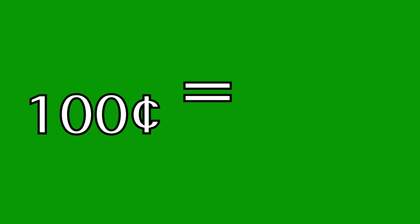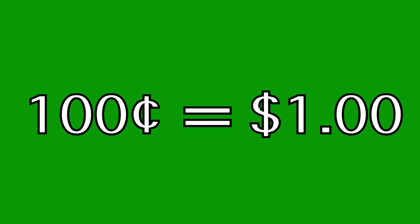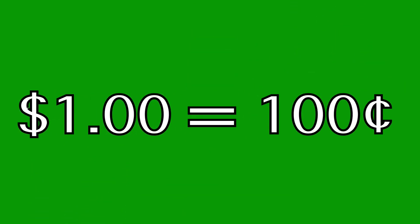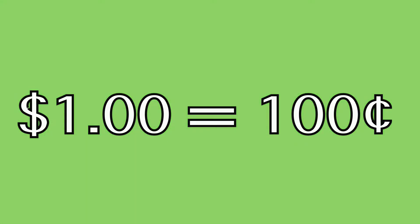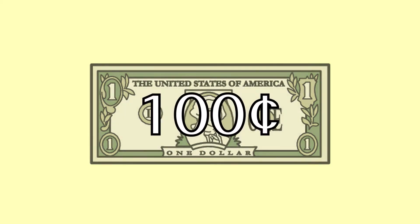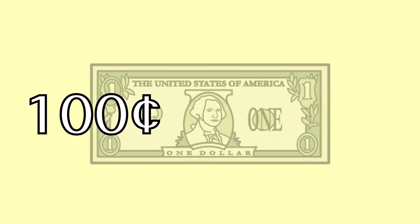Finally, I wanted to include a one dollar bill. Many kids, when they think of dollars, they think of paper money. And when they think of cents, they think of coins. Kids can get stuck in this way of thinking. So after demonstrating that various quantities of coins can equal a dollar, we're going to show that a one dollar bill can also be thought of as one hundred cents.